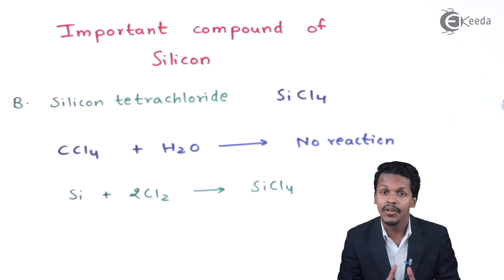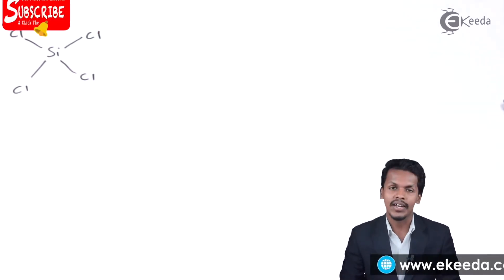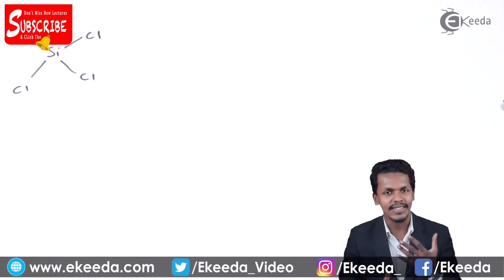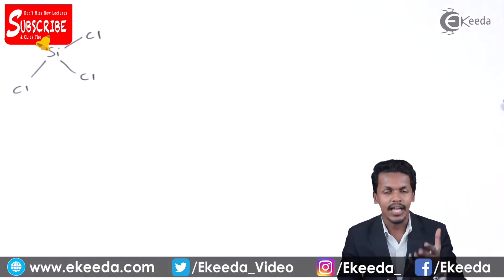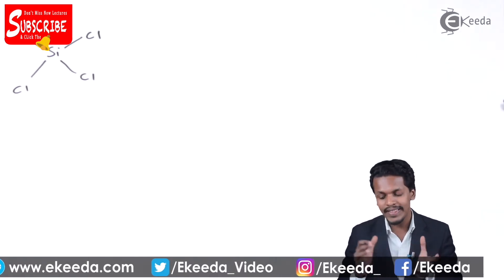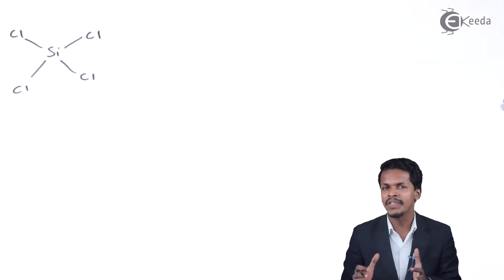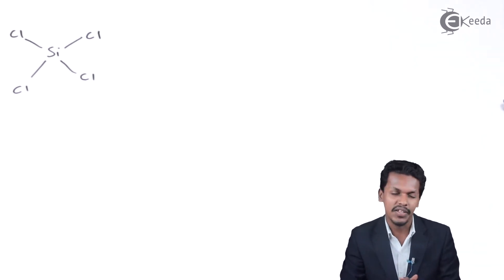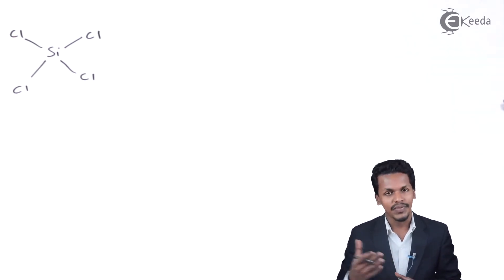Now let us return to the chemical properties. Silicon tetrachloride can undergo hydrolysis, as I mentioned. Regarding its structure, silicon tetrachloride is tetrahedral — similar to carbon, which also forms a tetrahedral structure when it undergoes sp³ hybridization, for example in methane where carbon is associated with four hydrogen atoms. In SiCl₄, silicon is associated with four chlorine atoms and undergoes sp³ hybridization, giving a tetrahedral structure.